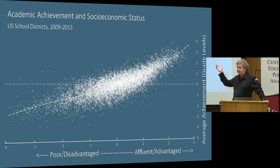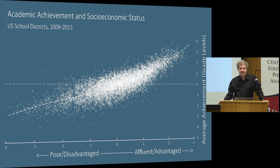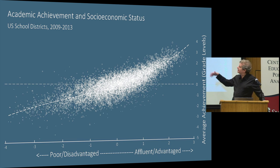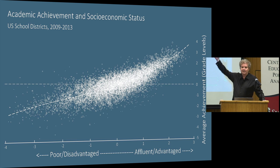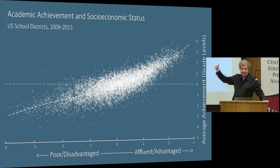There is an enormously strong correlation between the academic achievement of the average student in a school district and the average socioeconomic family conditions in that district. That correlation is about 0.8 to 0.85 — a huge correlation. Socioeconomic conditions alone are an incredibly powerful predictor of average performance. That's not to say there aren't kids in low-SES districts performing well above the national average, or kids in high-SES districts performing well below, but the means are quite highly correlated with socioeconomic conditions.